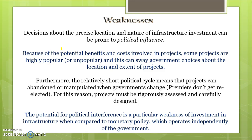Use the east-west link as an example. Decisions about the price, location, and nature of infrastructure investments can be prone to political influence. Because of the potential benefits and costs involved, some projects are highly popular and this can sway government choices. Because of short political cycles in Australia — often only three years — the person who suggested the project is often not in power when it gets built. For example, with the east-west link, Labor won parliament and therefore did not want it built, and all the plans the Liberal government had put in place essentially fell through because of the new state parliament leadership. The potential for political interference is a particular weakness of infrastructure investment compared to monetary policy, which is completely independent.